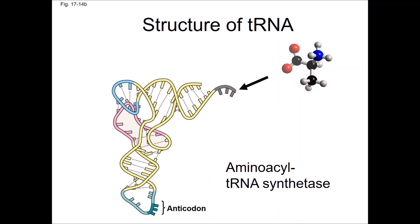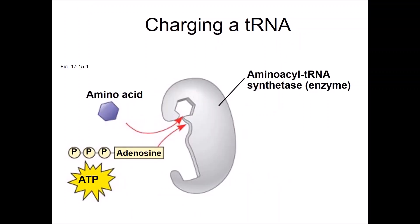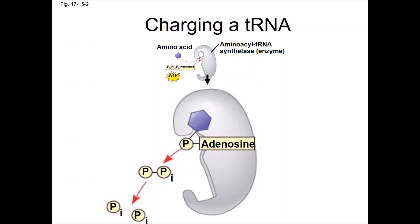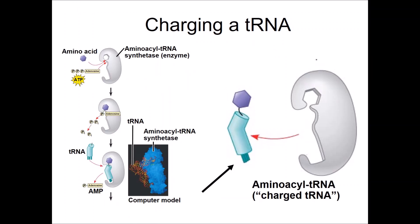An enzyme called aminoacyl tRNA synthetase matches a tRNA to its correct amino acid. Each aminoacyl tRNA synthetase fits one species of tRNA and one type of amino acid. There are many different flavors of tRNA and many different flavors of aminoacyl tRNA synthetase. Like DNA polymerization and RNA polymerization, this process decreases entropy and costs the cell energy, here in the form of ATP. The aminoacyl tRNA synthetase joins a specific amino acid to a tRNA, and the tRNA that is now charged leaves the enzyme. It is now an aminoacyl tRNA.